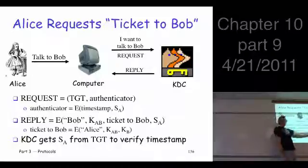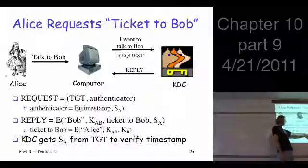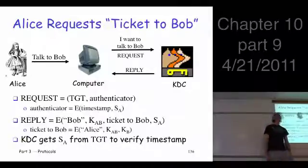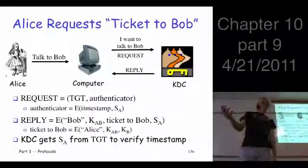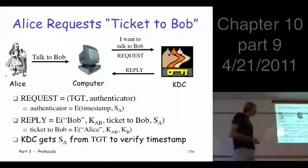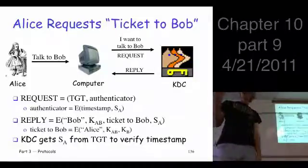What about the ticket to Bob? Well, the ticket to Bob looks like this. It says, hey, you should be talking to Alice. Here's a key that you can use to talk to Alice, and it's all encrypted with this key, which is known to Bob and who else? KDC, which created that. So you got it here.